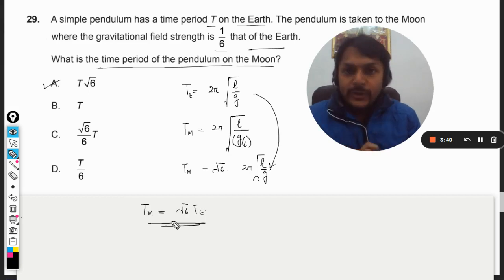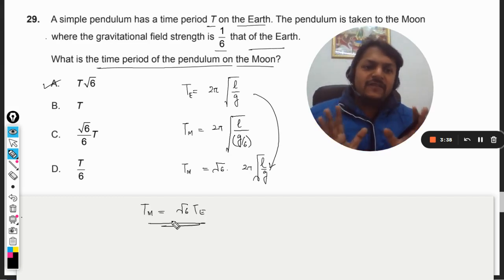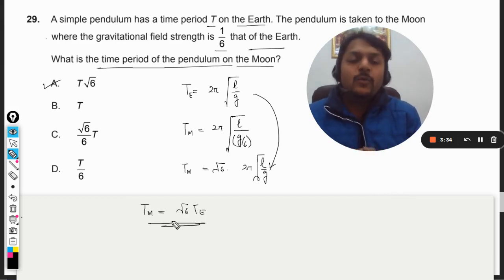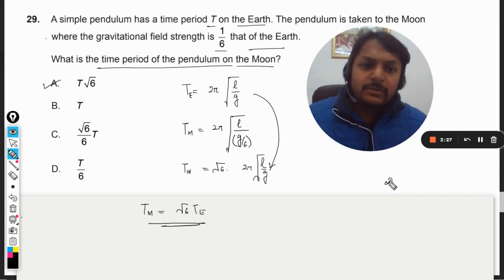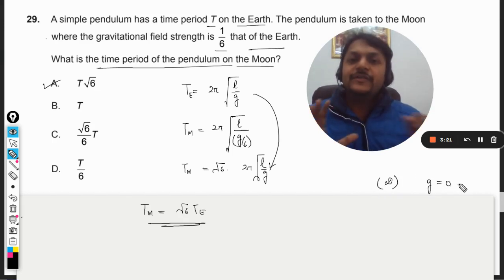Okay, so this is how we do it. And here I have another piece of information for you which might help you in coming exam. Like what is the time period of a pendulum in a satellite? Now if the same pendulum is taken into a satellite, the time period will become infinite. Why? Because the gravity in a satellite we take it to be 0.